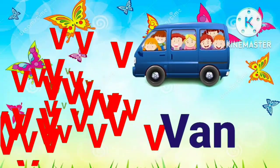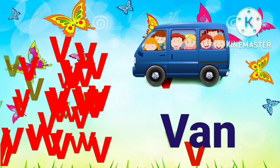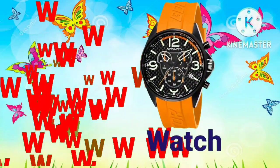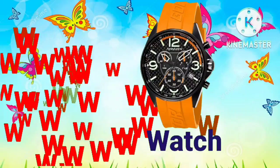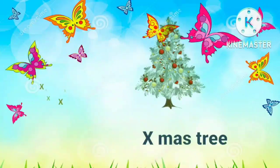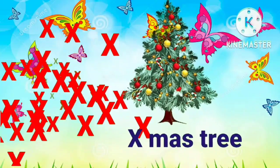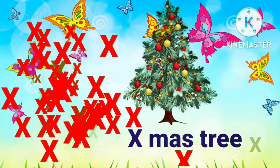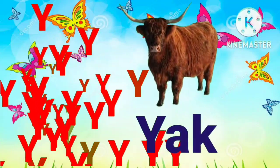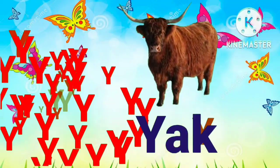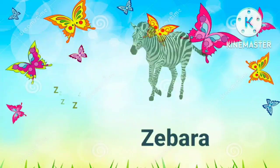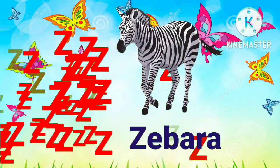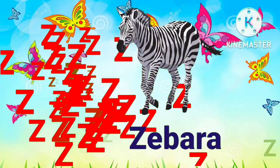V for wine, W for watch, X for X mastery, Y for yacht, Z for zebra.